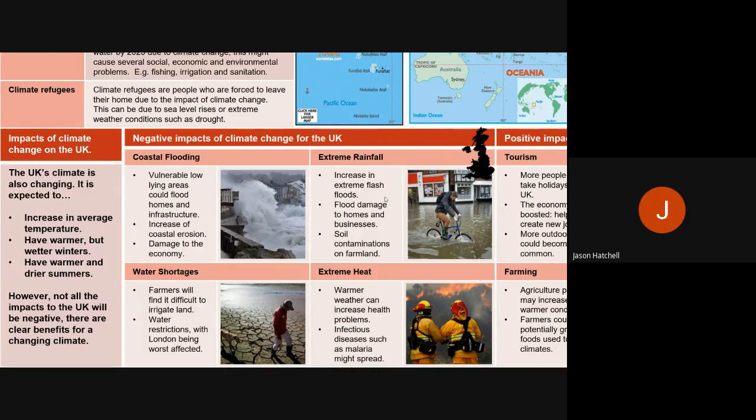The third negative is extreme heat. As temperatures rise, our summers have been getting hotter — temperature records have been broken a couple of times in recent years, which is unusual for the UK. Warmer weather can lead to health problems, particularly in young babies and elderly people, who have weaker immune systems and struggle to fight extreme heat. It also leads to infectious diseases spreading — it is not out of the realm of possibility that in the next few hundred years the UK could see diseases like malaria as it becomes more of a tropical environment.